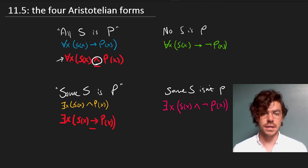This means there might be no S's at all, which doesn't give us what we want. We want to say that there really exists an S which is a P, and the conditional doesn't allow us to do that.